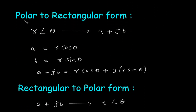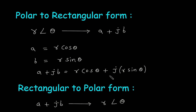To convert polar form to rectangular form — R at an angle of theta — we convert it into its equivalent rectangular form A plus jB. We need to find A and B, where A is equal to R cos theta and B is equal to R sin theta. So A plus jB equals R cos theta plus j R sin theta.